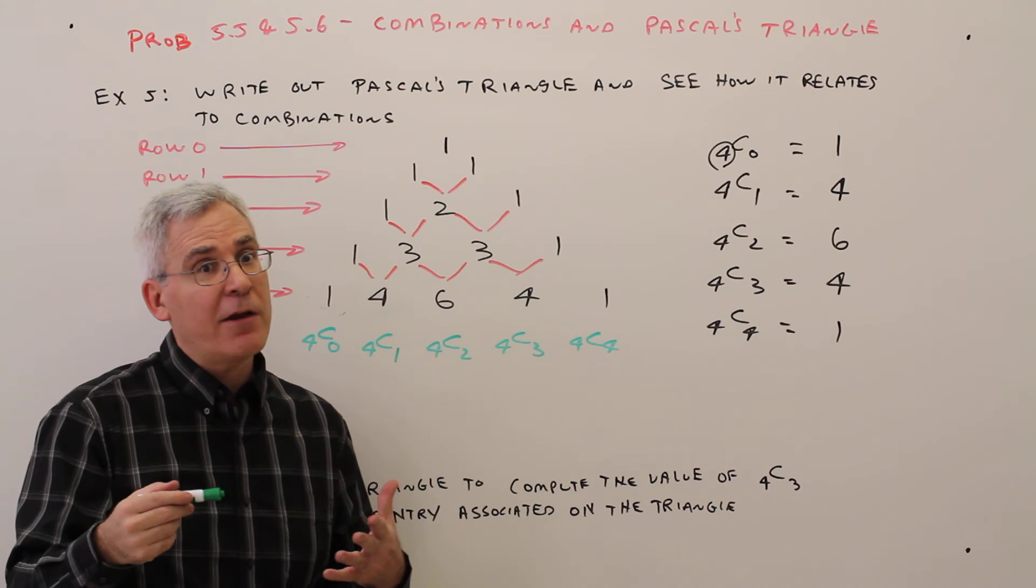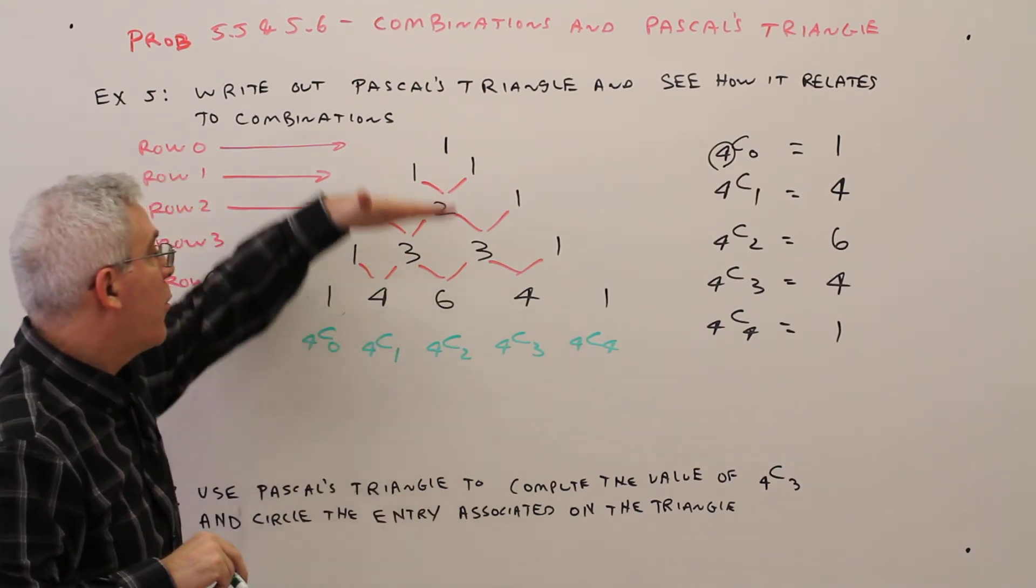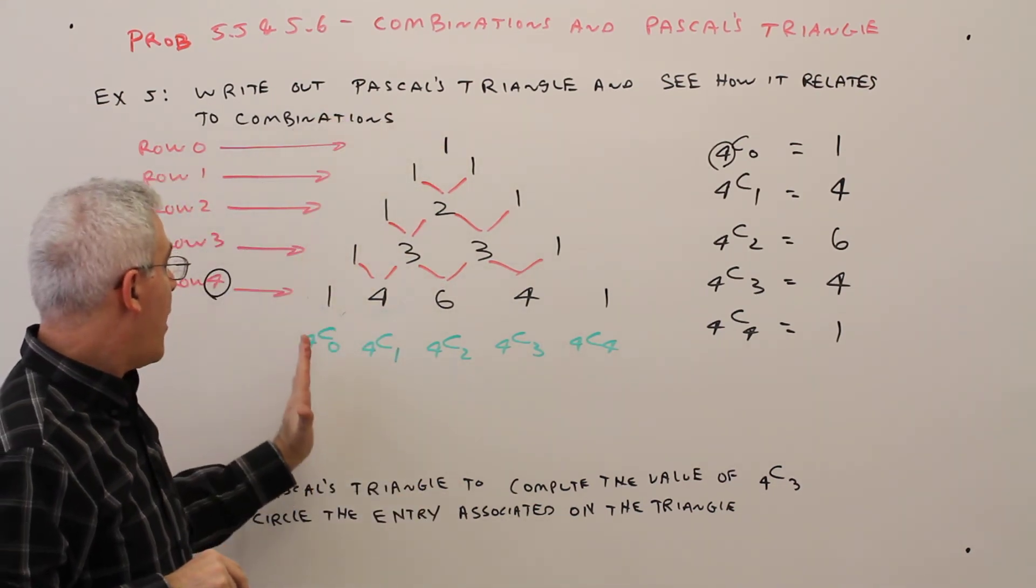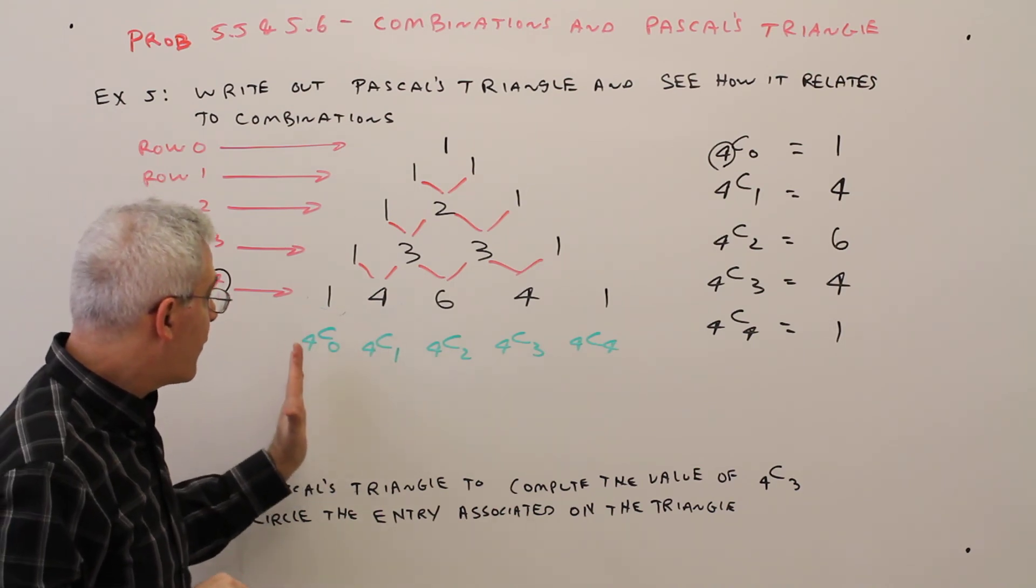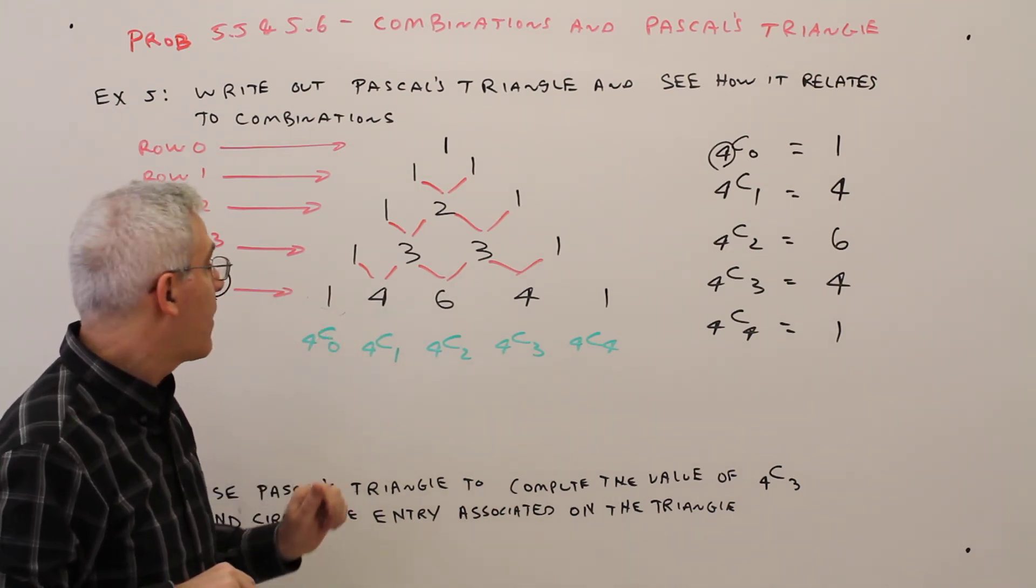So again, for Pascal's triangle, two things to remember: We start at row 0, and going in rows, we start with choosing 0.